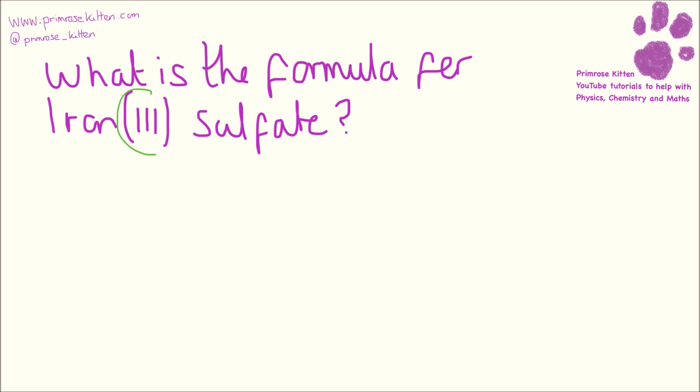So first of all let's look at the iron 3. Now this bit here means that iron is going to have a 3 plus charge. Now you are going to get a formula sheet which is going to have these on, but this is just an exceptionally complicated way of combining things. Sulfate is SO4 2 minus.